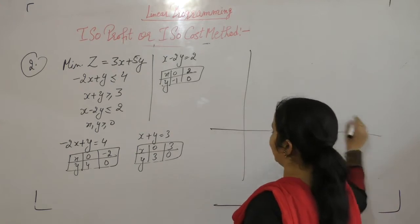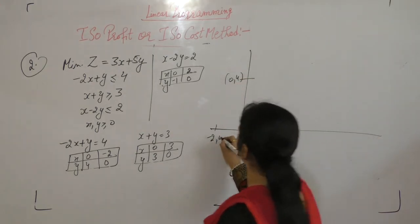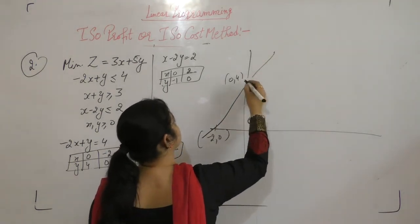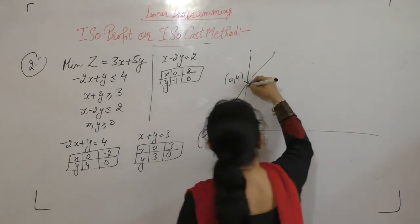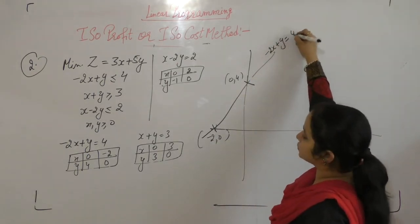Draw the points. x is 0, y is 4. x is minus 2, y is 0. So this is the line minus 2x plus y equals 4.